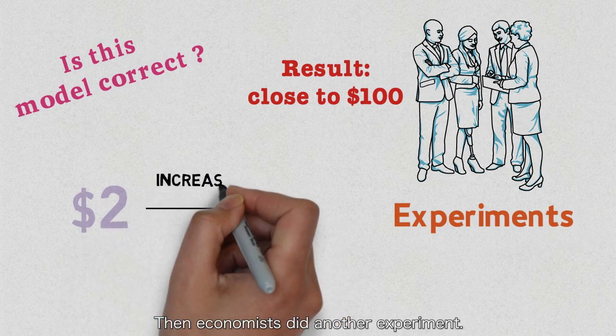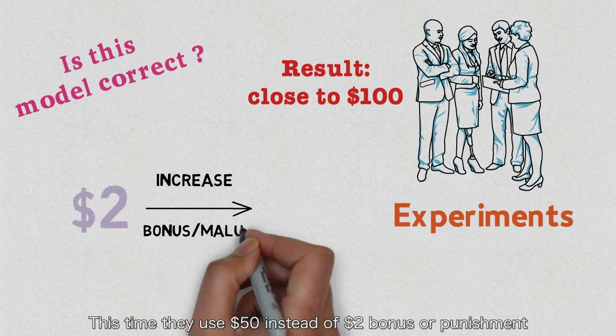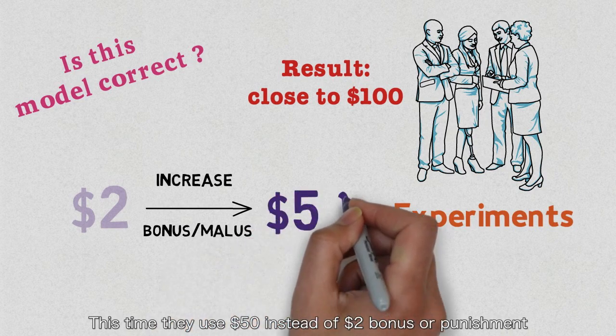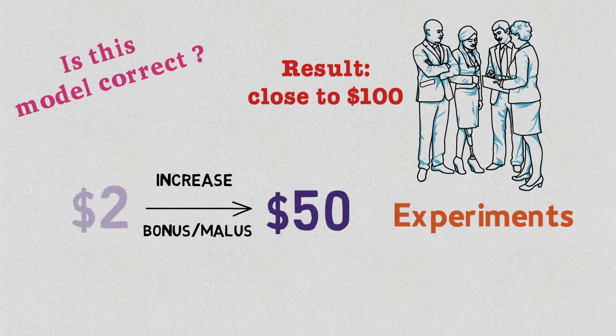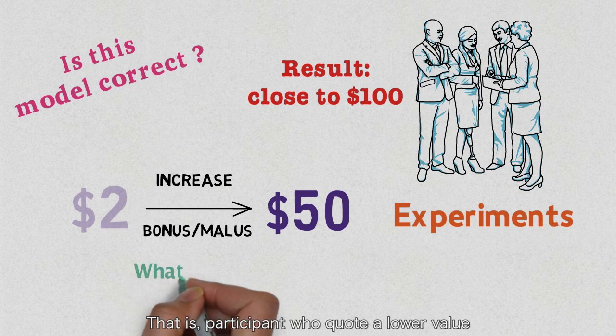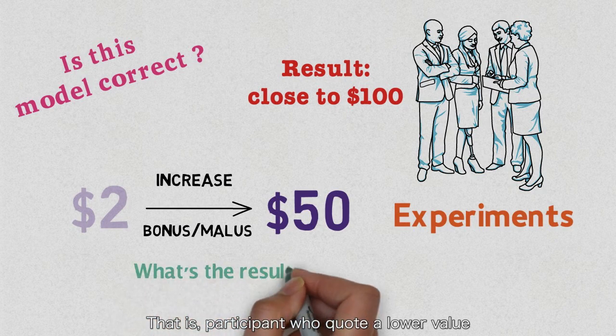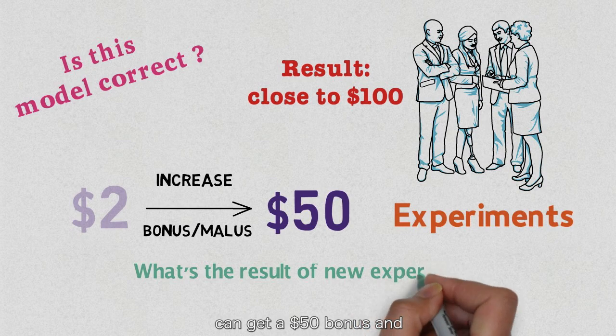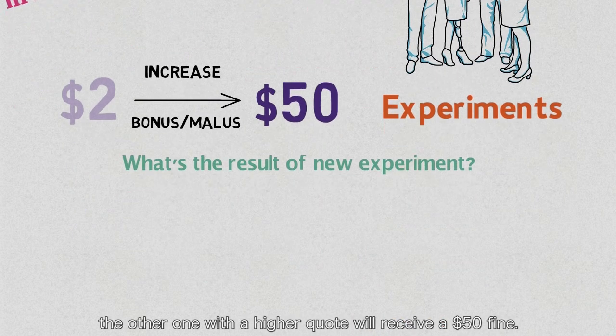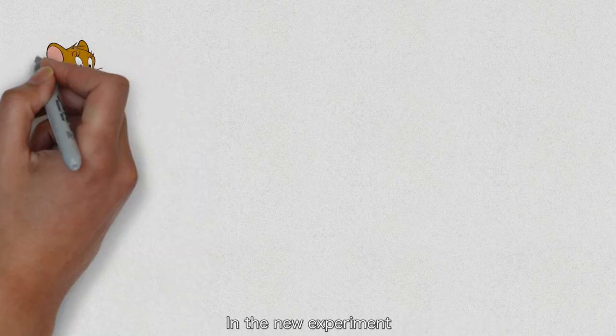Then economists did another experiment. This time they use 50 dollars instead of that two dollar bonus or punishment. That is, participants who quote a lower value can get a 50 dollar bonus and the other one with a higher quote will receive a 50 dollar fine. In the new experiment, let's assume Jerry quotes 49 dollars and Tom quotes 48.